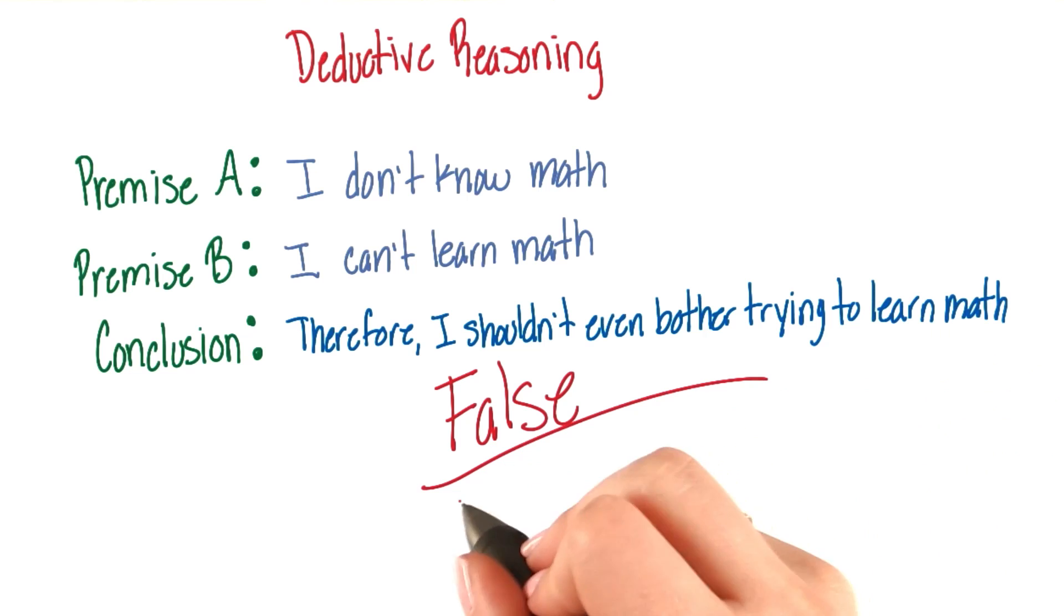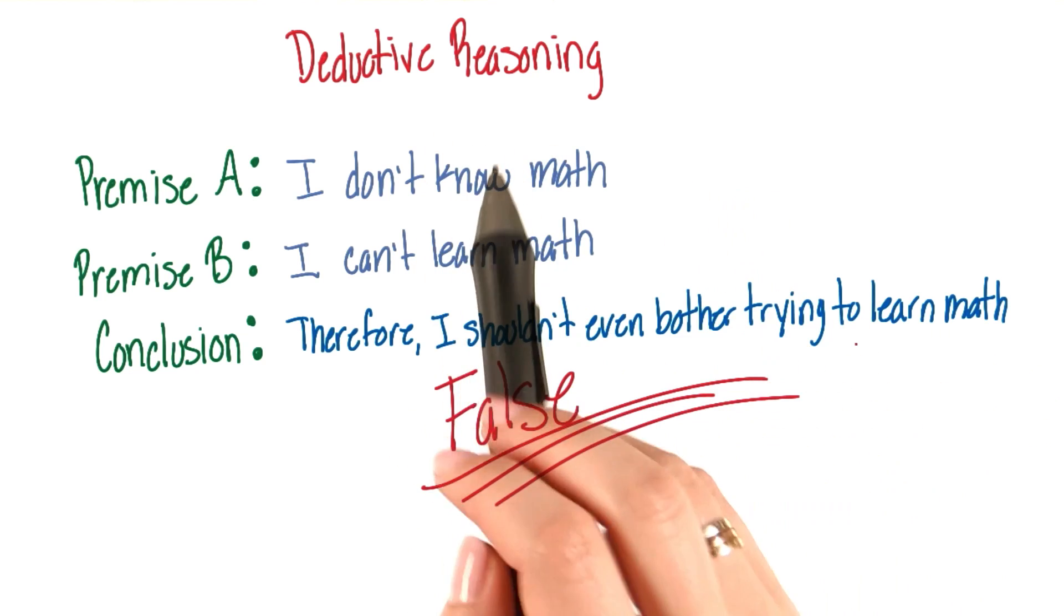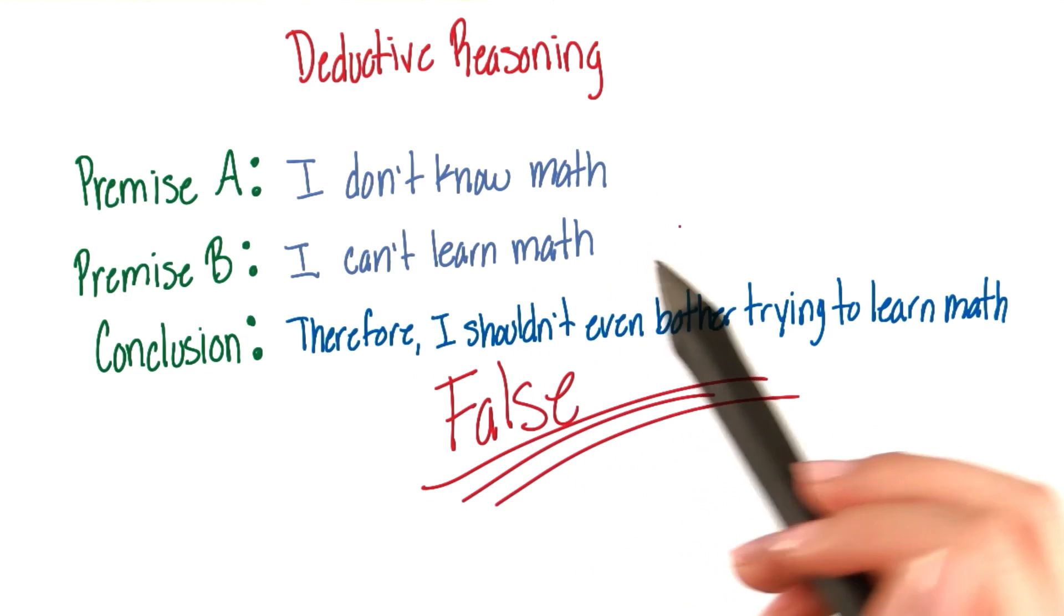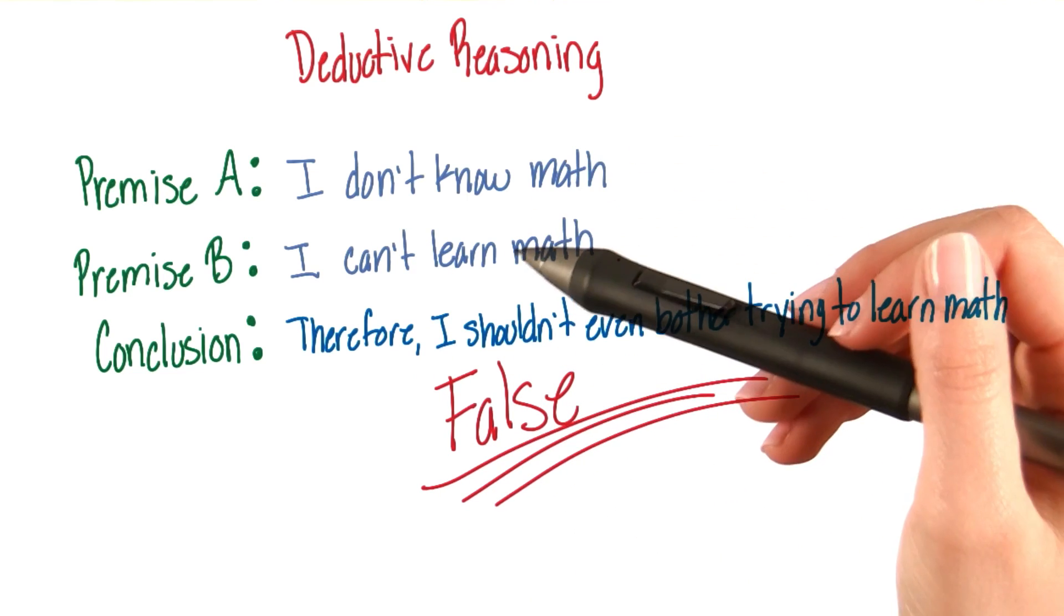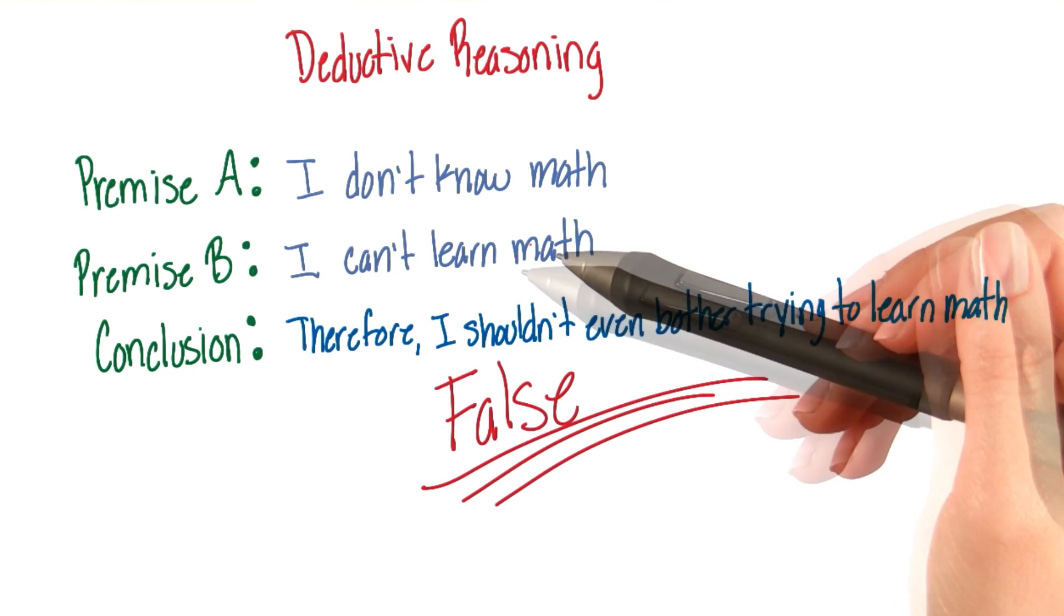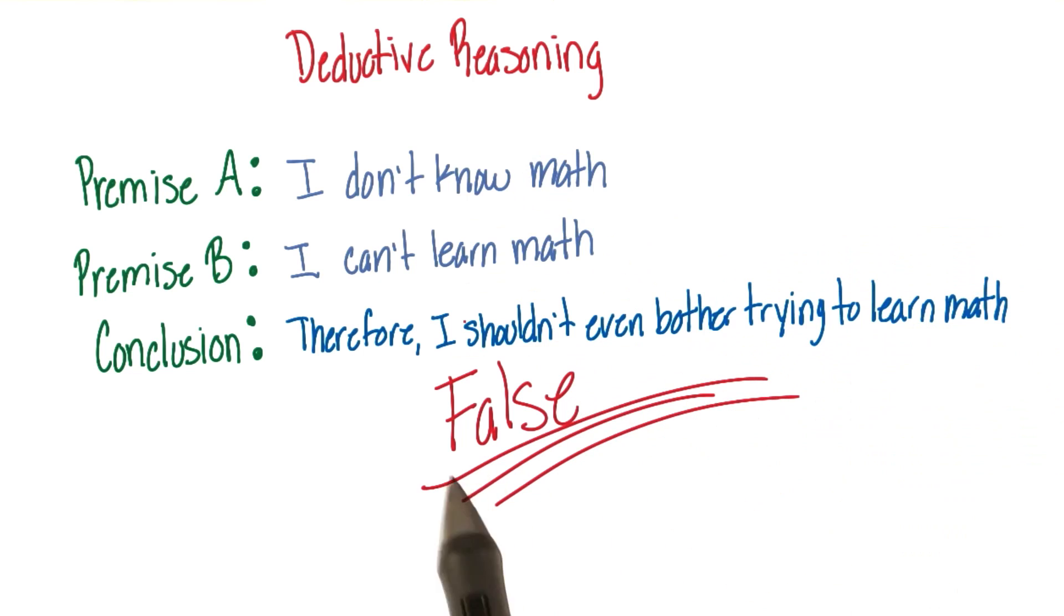We see here that this reasoning leads to a false conclusion, because premise A is false and so is premise B. So even though the argument is easily structured in the same way, one leads to an accurate conclusion, and one, this one, does not.